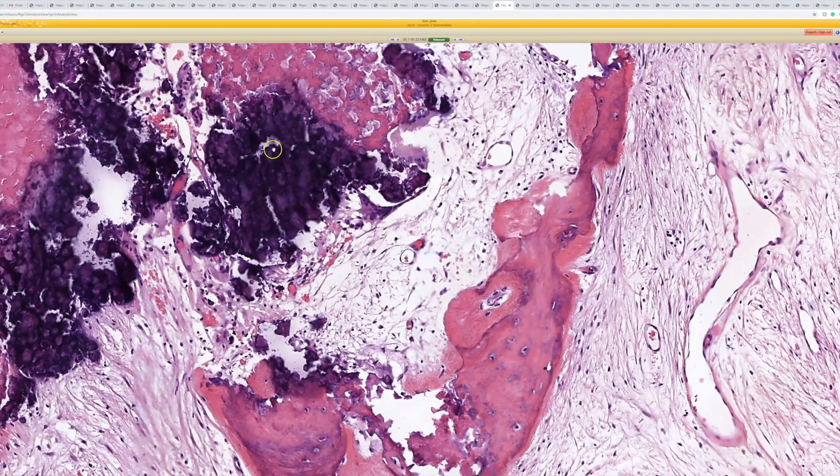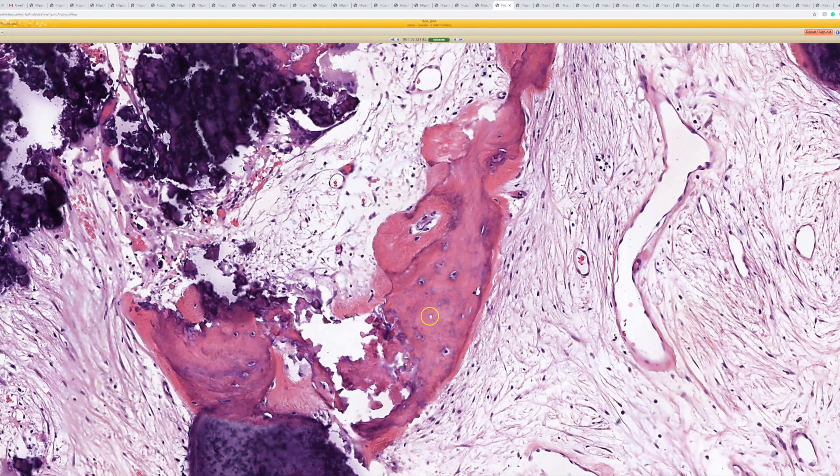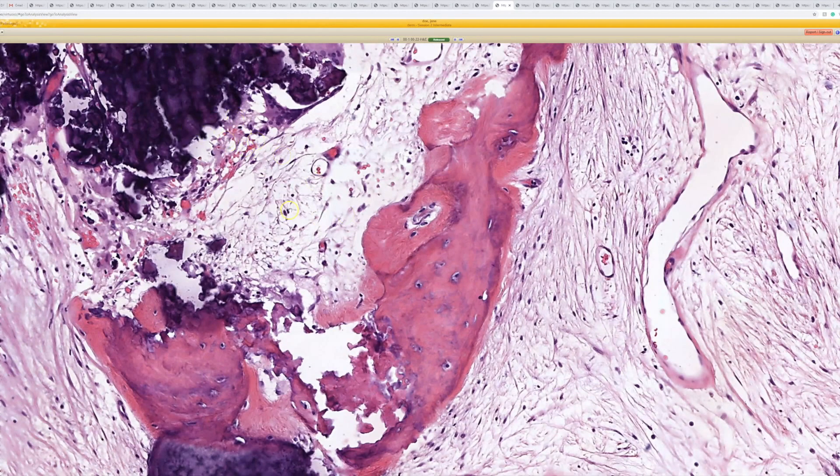How do you tell them apart? Well, calcium is kind of just fragmented and chunky purple stuff. Bone is actually going to be made not just of calcium, but calcium and collagen.